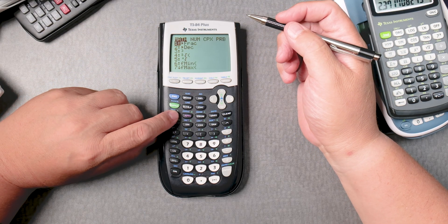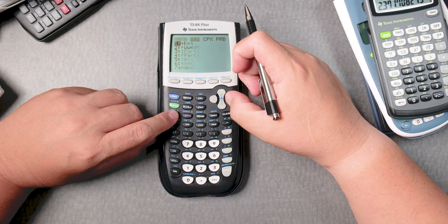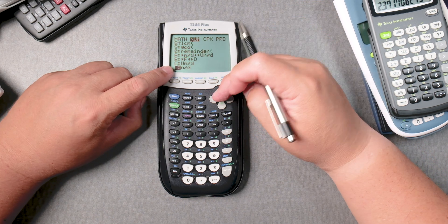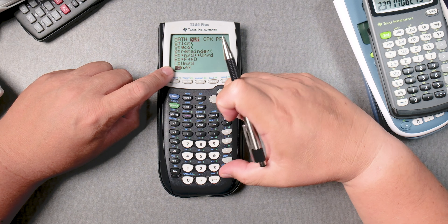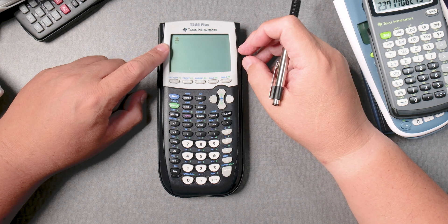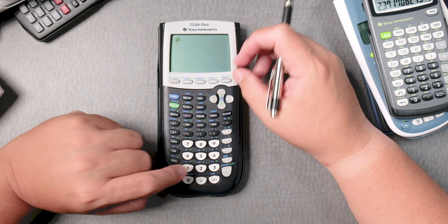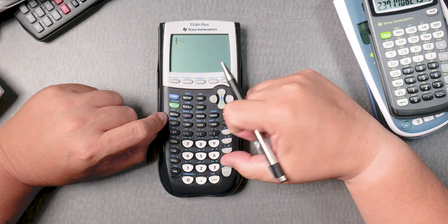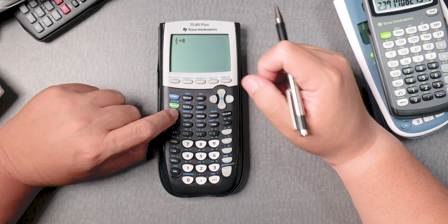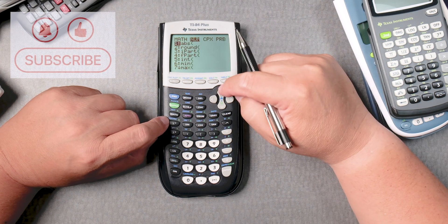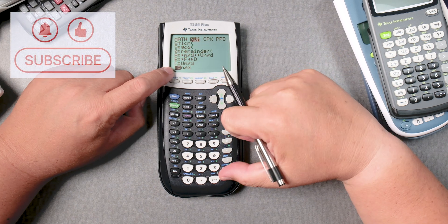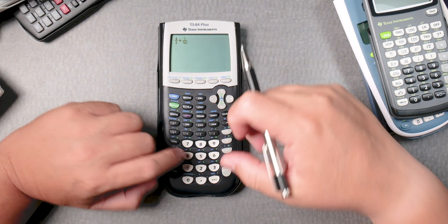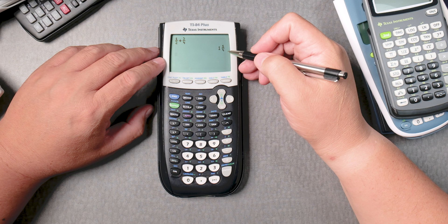If you press MATH here and go to NUM, and move the arrow up, you can have the format of n over d which is a fraction. So let's say 1 divided by 2, go across, plus, and then go MATH, NUM, go up, do this again and then 3 over 4, 3 down 4, gives me an answer of 1 and 1 fourth.